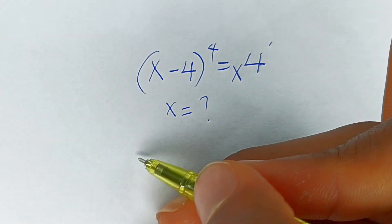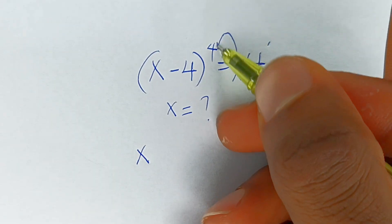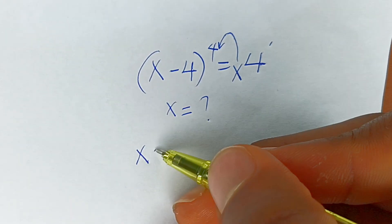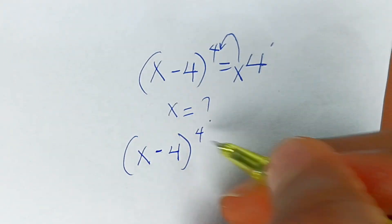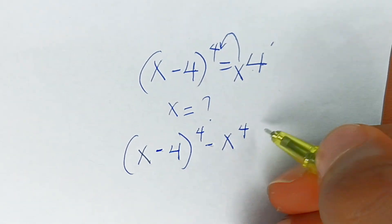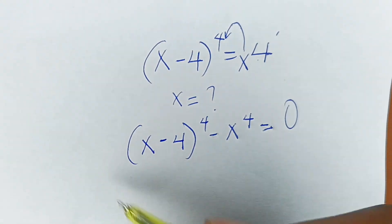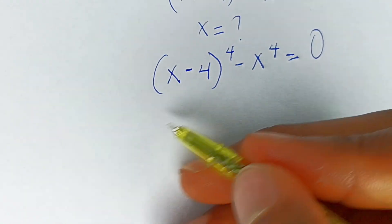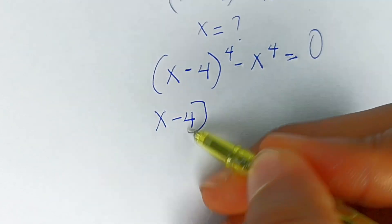First, we subtract x to the power of 4 from both sides. So we have (x minus 4) to the power of 4 minus x to the power of 4. If you subtract x to the power of 4 from the opposite side, it becomes 0.